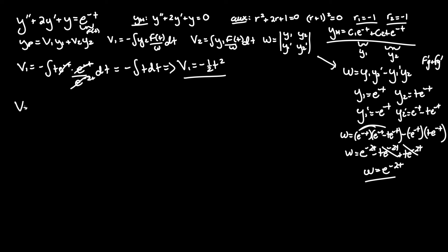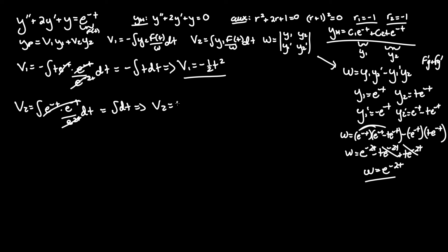As for v₂, that's the positive integral of y₁·f(t) over the Wronskian: ∫ e^(-t)·e^(-t) / e^(-2t) dt. The same cancellation occurs, and now we're not even left with a t term — all we have is the integral of dt. Thus v₂ = t.